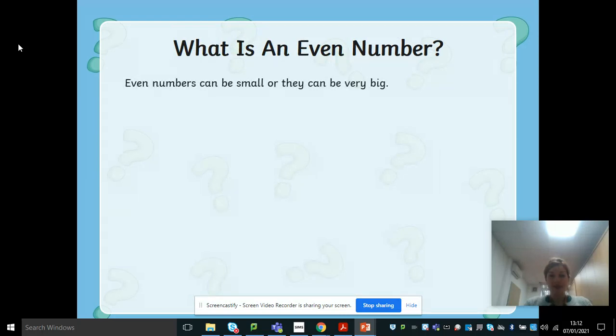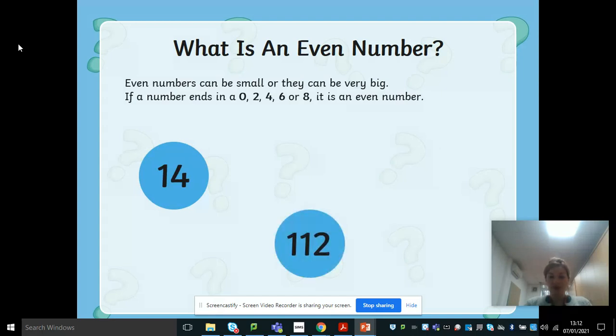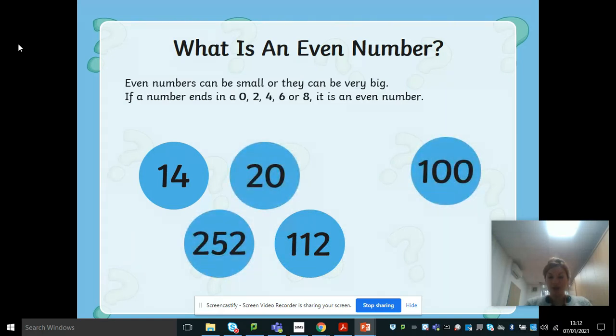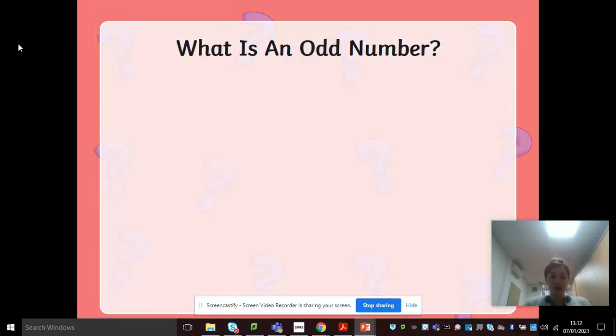So even numbers can be small or they can be very big. If a number ends in a zero, two, four or six or eight, it is an even number. So number 14, is that odd or even? Even. Number 112, number 100, number 252, number 20, number 36, number 18. So all of those are even numbers, even those really big numbers that are in the hundreds.